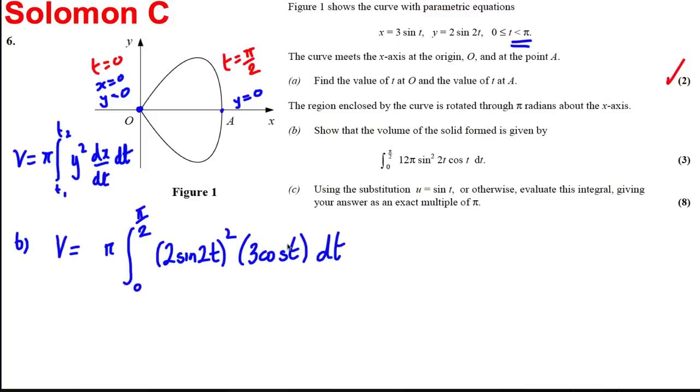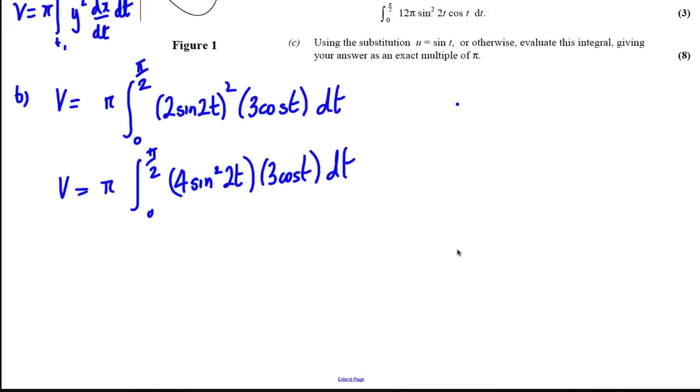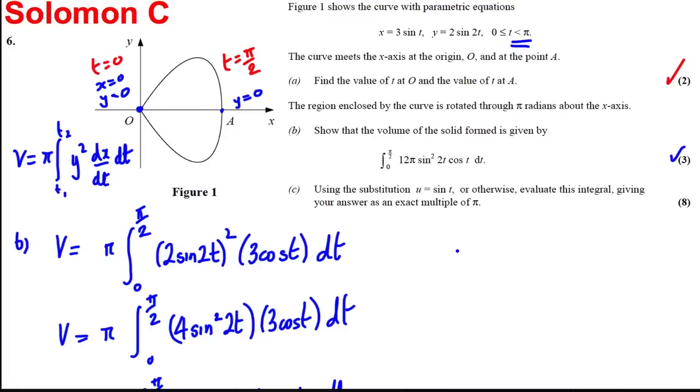Now dx/dt is clearly 3cos(t), so the volume is going to be π times the integral between 0 and π/2 of 4sin²(2t) multiplied by 3cos(t) dt. If I tidy that up, I get what's required in the question: π times the integral between 0 and π/2 of 12π sin²(2t)cos(t) dt.